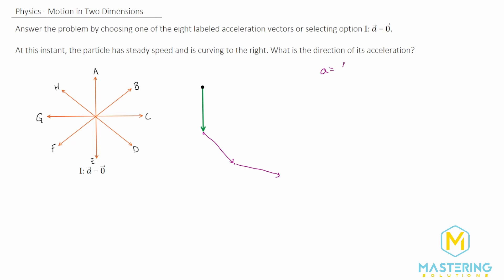Acceleration equals the change in velocity over change in time. V final minus v initial gives us delta v. Whenever we take two vectors and subtract them, we take the initial and subtract it from the final for this delta.